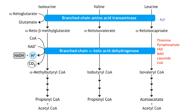Now we will start the branched-chain amino acids. Valine, leucine, and isoleucine are all essential amino acids. Valine is glycogenic, whereas leucine is the only purely ketogenic amino acid. Isoleucine is both glycogenic as well as ketogenic.